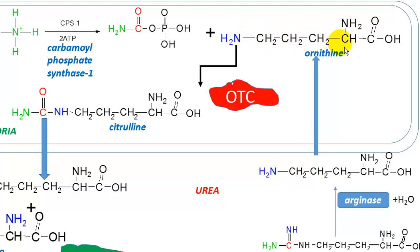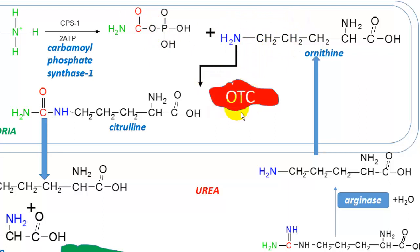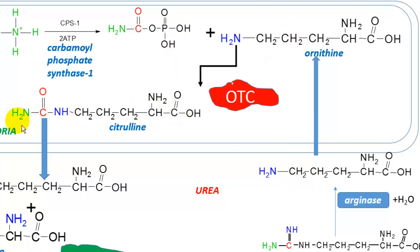Ornithine has all the structural features of an amino acid — the alpha hydrogen, alpha carbon, alpha amino group, alpha carboxylate, and side chain — yet it is not encoded by the genetic code and is generally not incorporated into proteins. The enzyme ornithine transcarbamylase catalyzes the reaction between carbamoyl phosphate and ornithine, and this enzyme has notable clinical relevance.